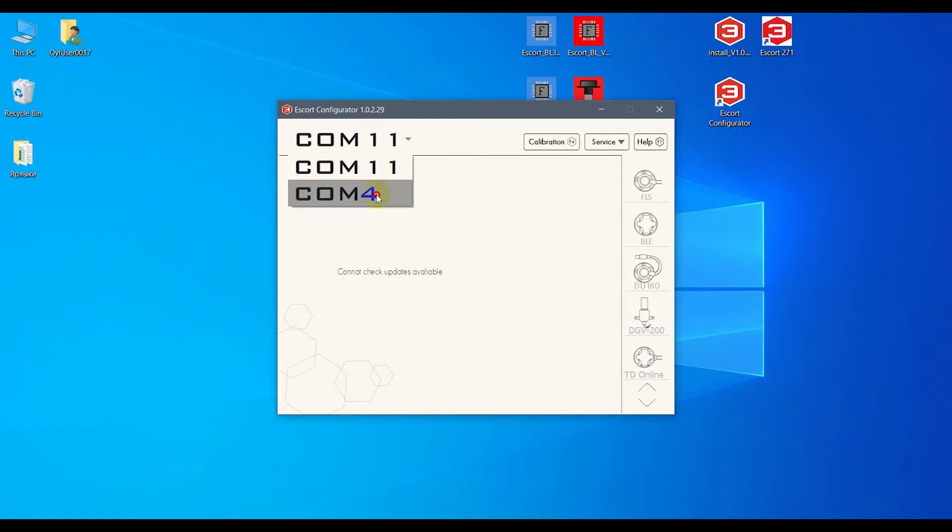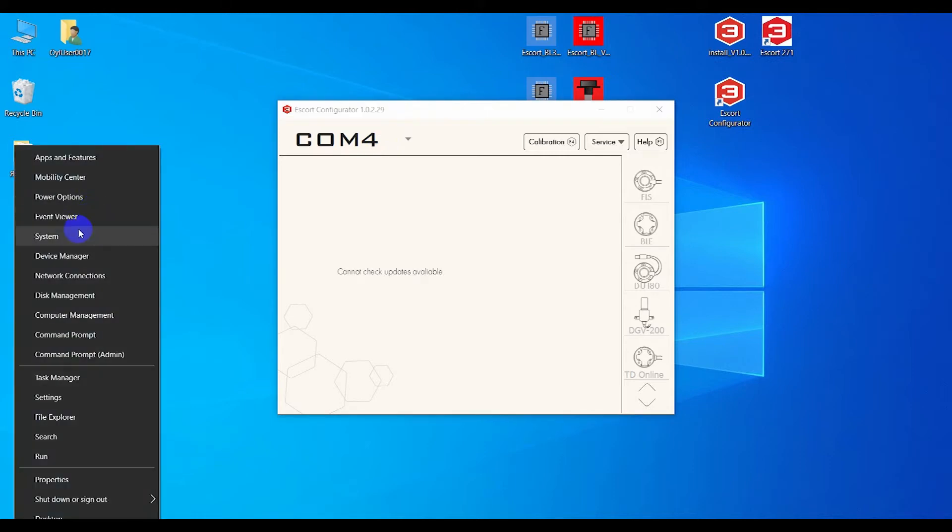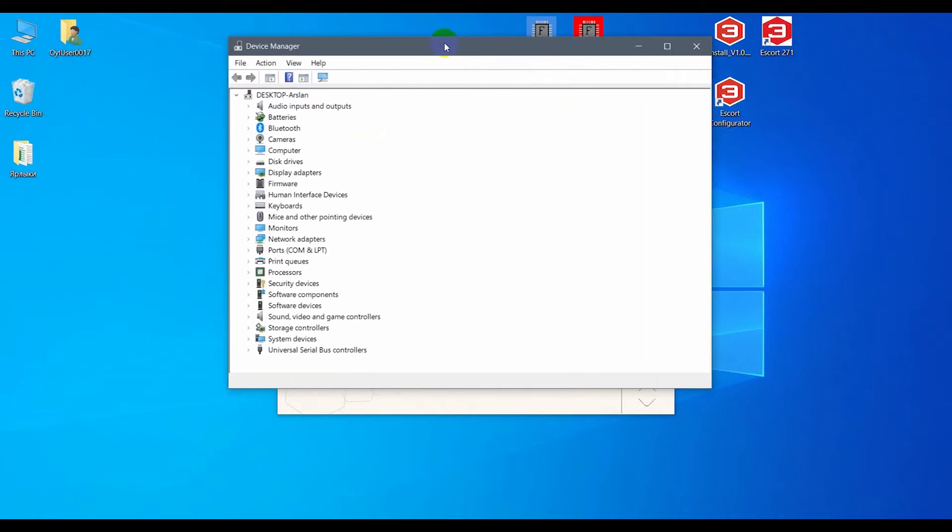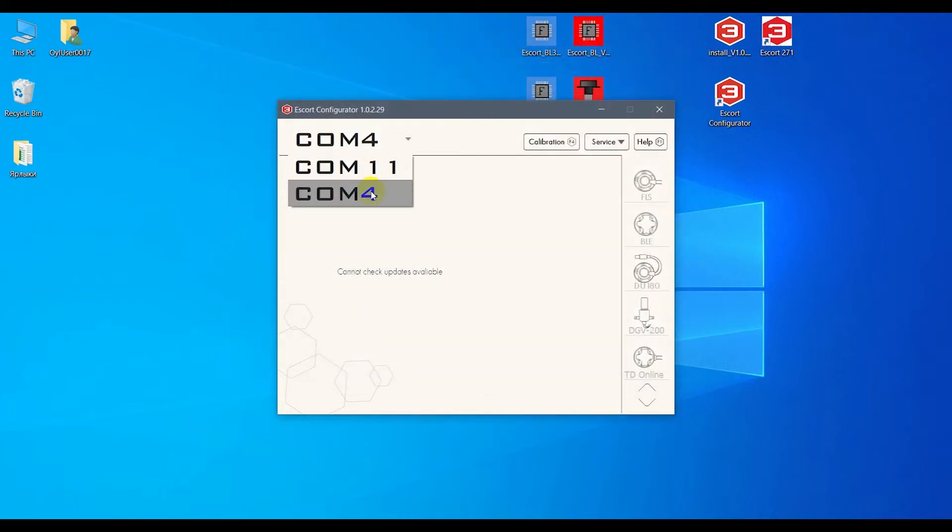In the configurator, you need to select the COM port with the number that corresponds to the converter. To find it, go to the Windows Device Manager, the section with COM and LPT ports. The C200M must be listed there as an ST Micro Electronics Virtual Comport with a certain number. You need to select the COM port with that number in the configurator.